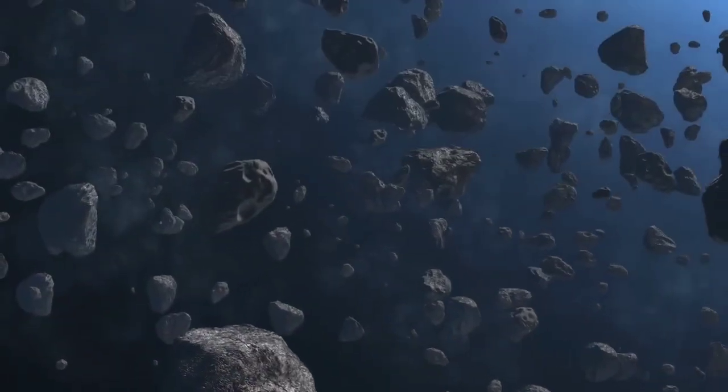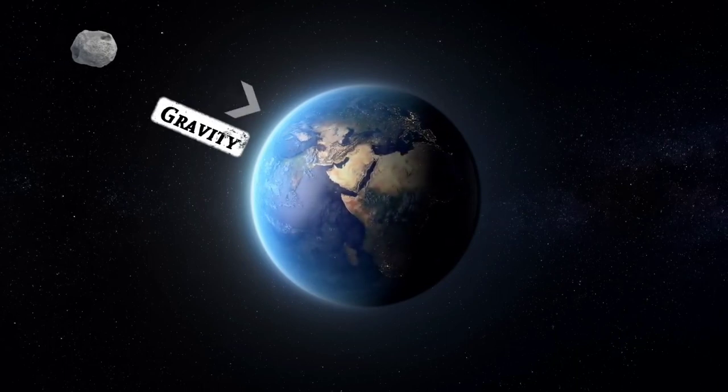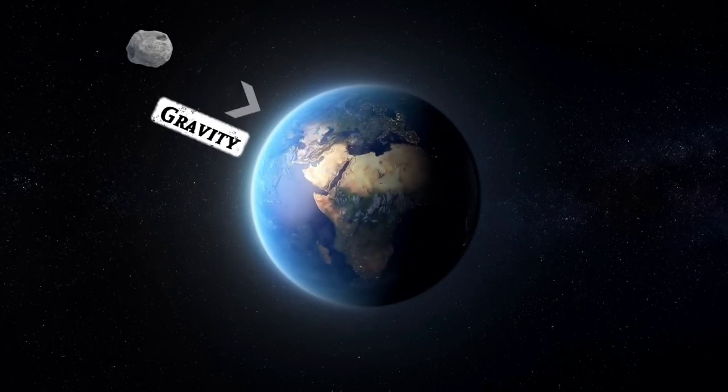Asteroids were formed millions of years ago as a result of collisions and have been traveling through space at high speeds since then. When they get closer to Earth, our planet's gravity attracts them, causing them to change their path.